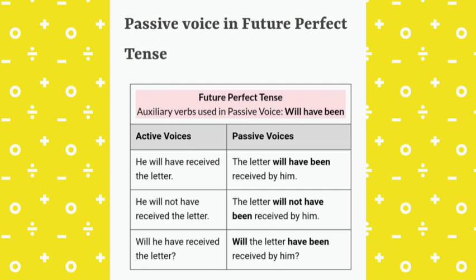Similarly, active voice (interrogative): 'Will he have received the letter?' Passive voice: 'Will the letter have been received by him?' In this way, we can change from active voice to passive voice in case of future perfect tense.